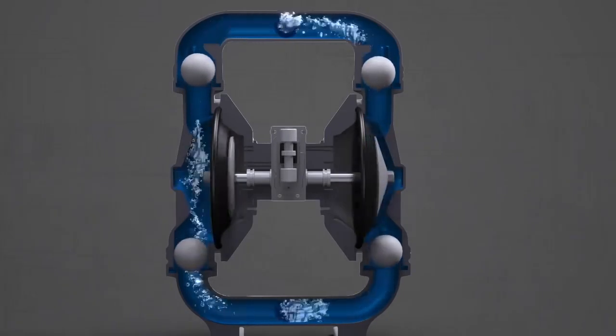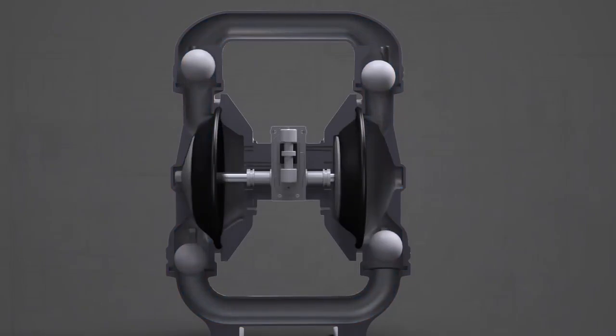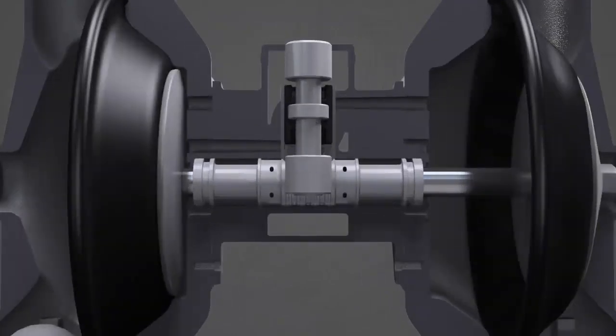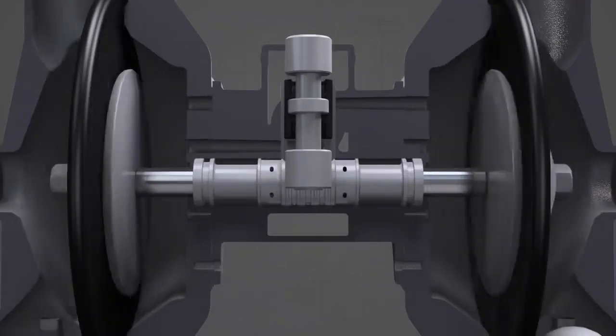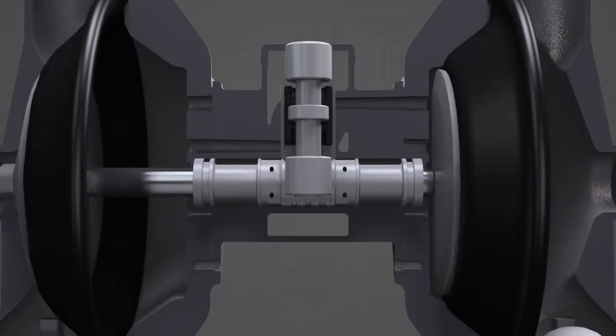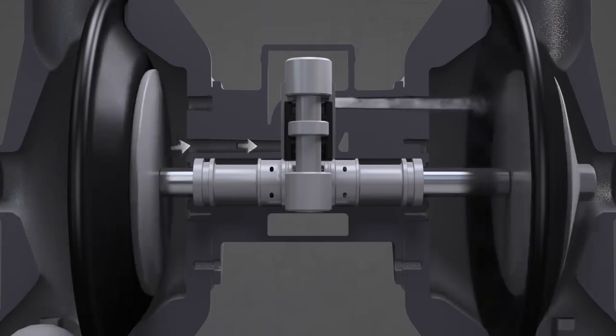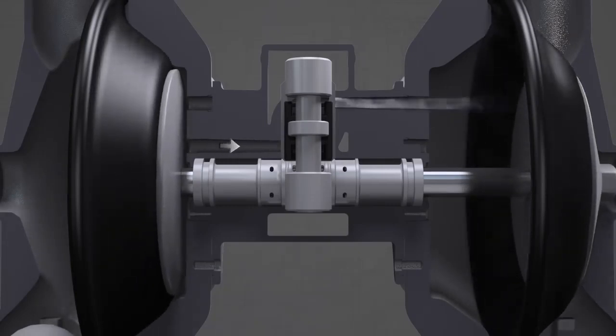The pump diaphragms are driven by pressurized air that is directed left and right by the movement of the main air valve. Here's how it works. When air pressure is applied to the pump, the main air valve moves up and down. When the main air valve is in the down position, air pressure is diverted to the right diaphragm. At the same time, exhaust air from the left diaphragm passes through the shuttle and shuttle plate and exits the rear of the pump.